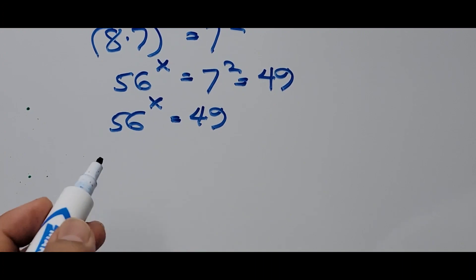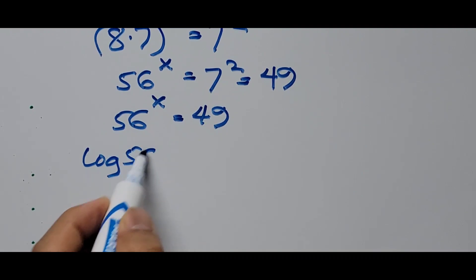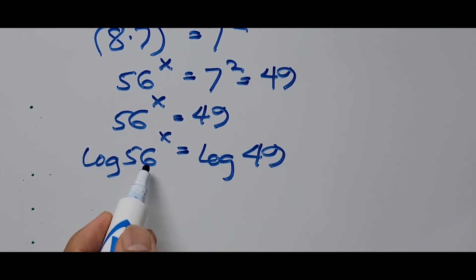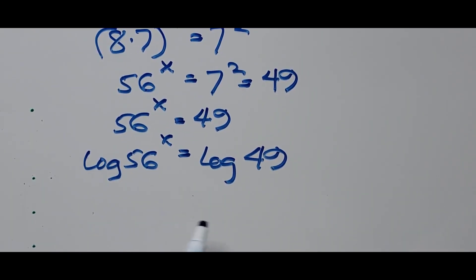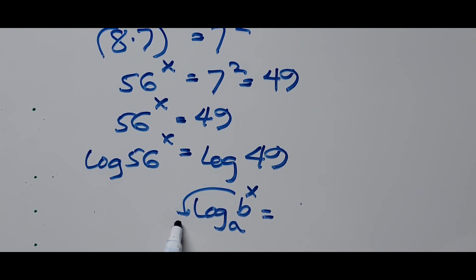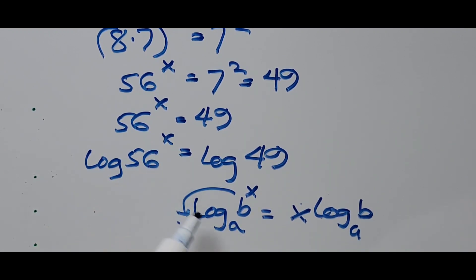Now we start using the logarithm. Taking the log of both sides: log of 56 raised to x equals log of 49. The logarithm rule states that log of b raised to x to base a equals x times log of b to base a — we bring the exponent to the front. In this case the base is 10.